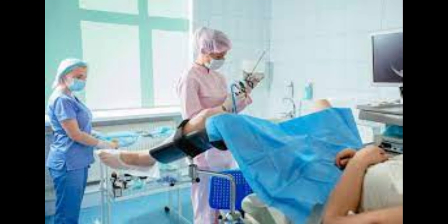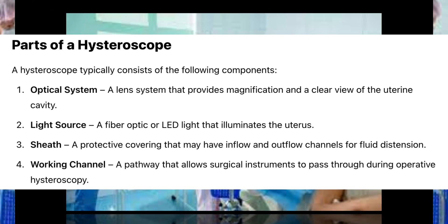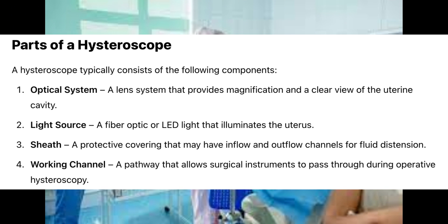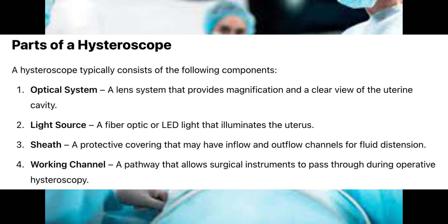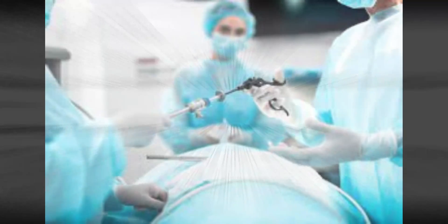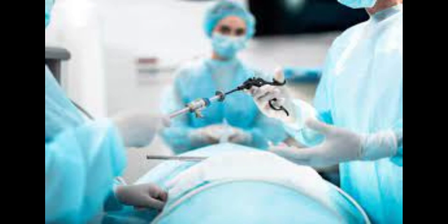Parts of a hysteroscope. A hysteroscope typically consists of the following components: 1. Optical system — a lens system that provides magnification and a clear view of the uterine cavity. 2. Light source — a fiber optic or LED light that illuminates the uterus. 3. Sheath — a protective covering that may have inflow and outflow channels for fluid distension. 4. Working channel — a pathway that allows surgical instruments to pass through during operative hysteroscopy.